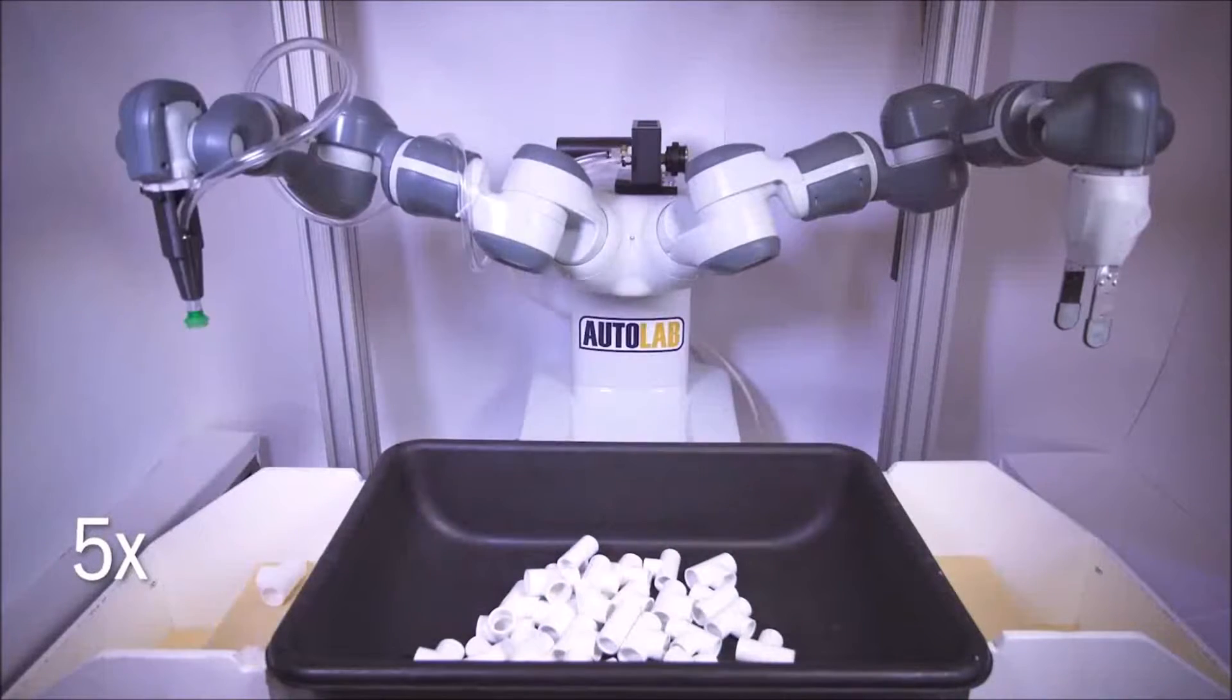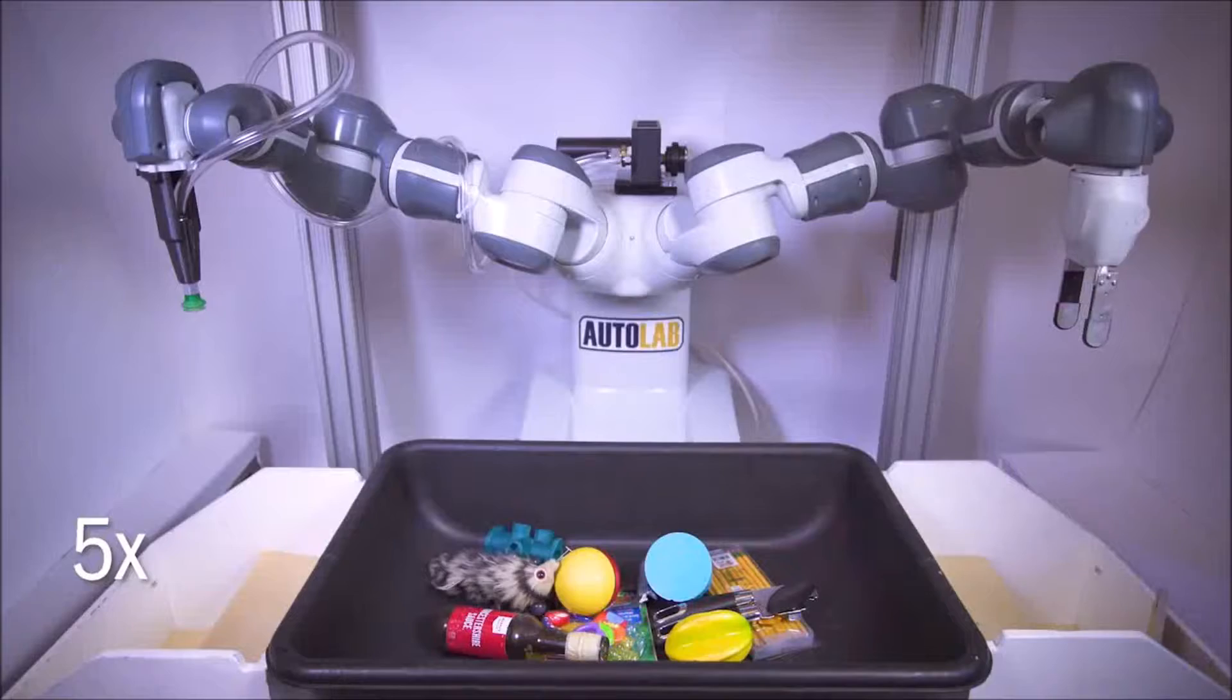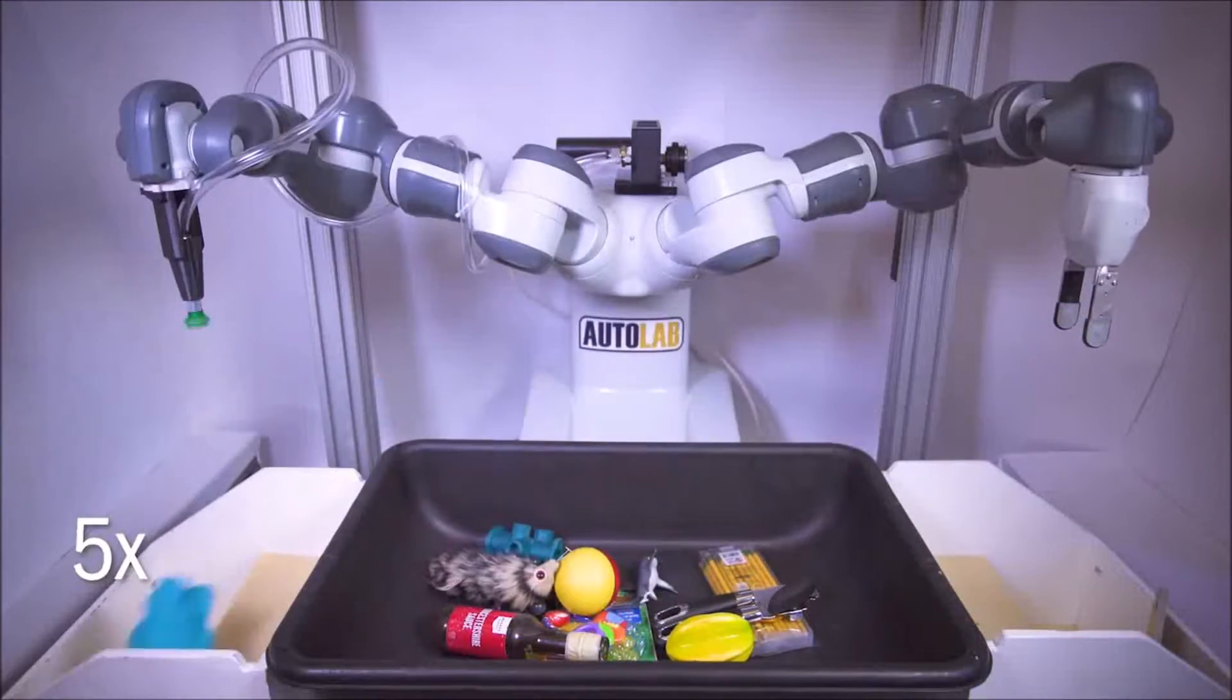On this robot with two grippers, the DexNet 4.0 policy consistently clears bins of up to 25 previously unseen objects to achieve a rate of over 300 picks per hour with 95% reliability.